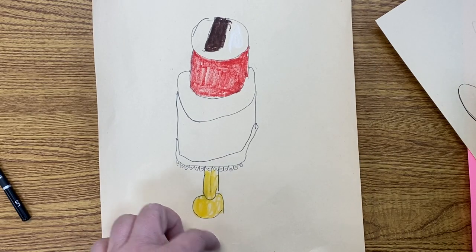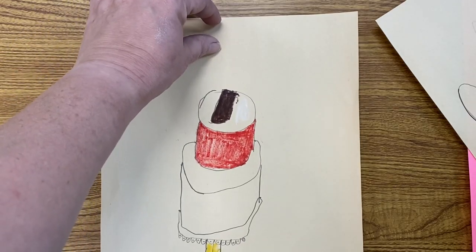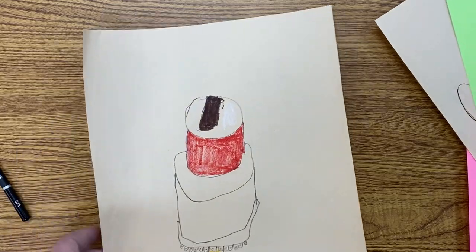Remember we don't want to go past this edge, or this edge, or the edge up here at the top, or the edge at the side. We want to leave a space all the way around. Draw bigger.